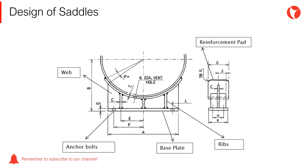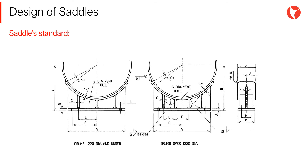Through good engineering practices and numerous lessons learned, it is customary to design saddles according to job specifications and customer standards. Depending on the dimensions of the equipment, the configuration of the saddle to support the vessel is chosen. The standard shown below applies to most pressure vessels supported by saddles; however, each of the elements must be checked.